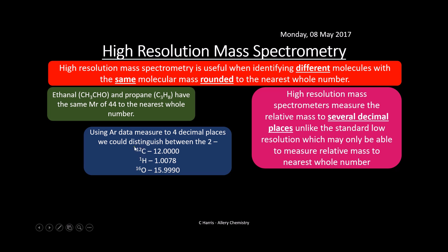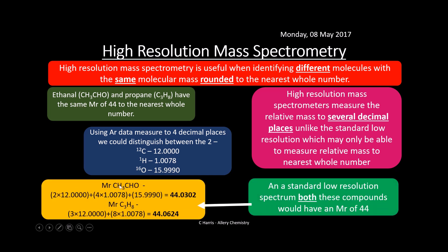Using the atomic mass data to four decimal places, we can distinguish the two. The precise mass of carbon-12, hydrogen, and oxygen to four decimal places gives us: the molecular mass of ethanal as 44.0302, and the molecular mass of propane C₃H₈ as 44.0624. If you round both of these, you get 44 for both — but using a high resolution mass spectrometer, you can see there's a difference. So the masses are actually slightly different and we can identify and distinguish between these two. Make sure you include all your decimal places and don't be tempted to round.